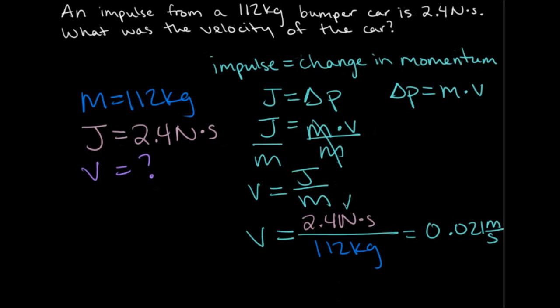Because this newtons represents a kilogram times a meters per second squared. So the kilograms are going to cancel out, and one of the seconds is going to cancel out, and all you'll have left is the units for meters per second.